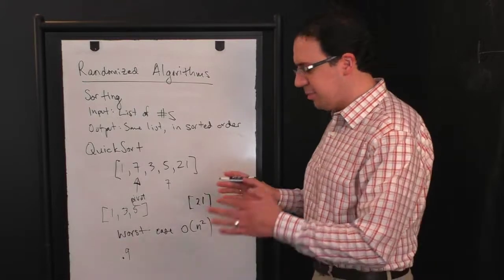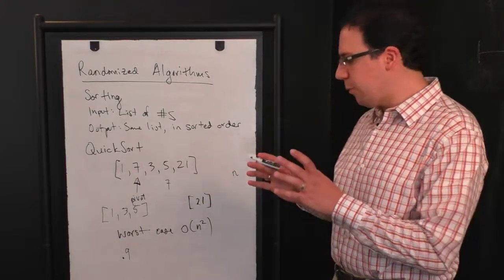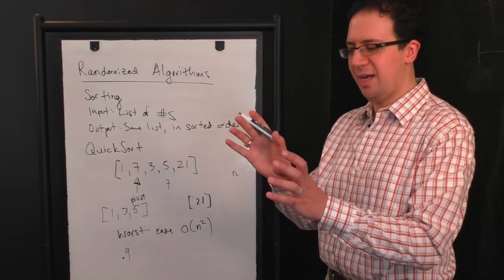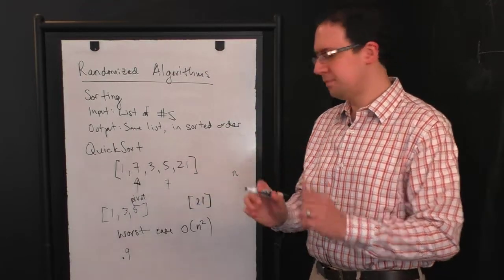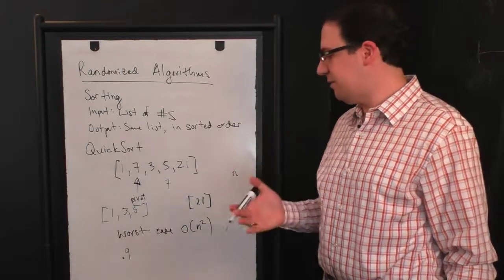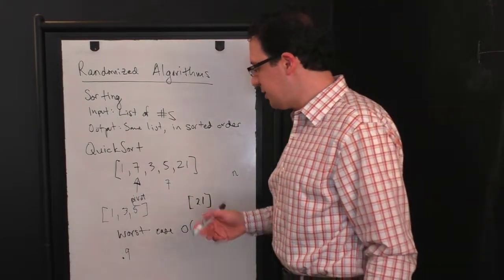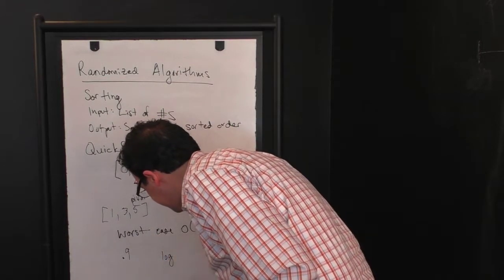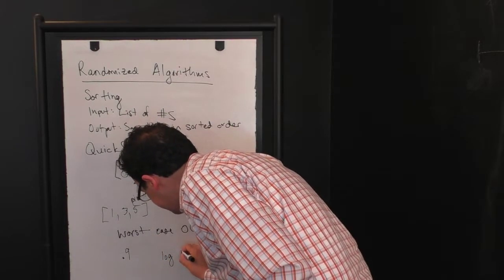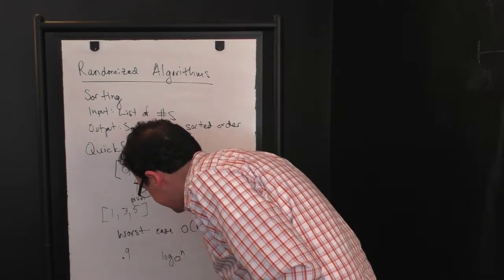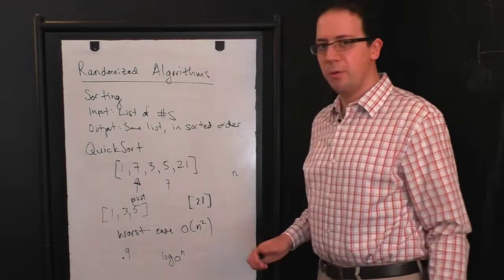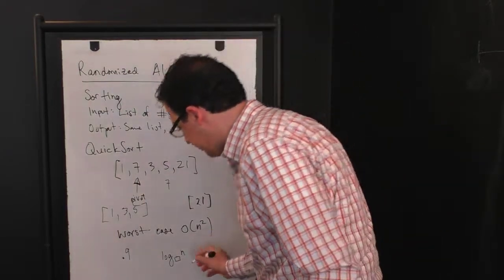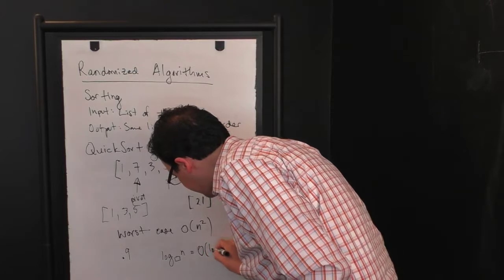And if it's in the middle 90%, then in the worst case, you're splitting your list into 5% of the list and 95% of the list. But the point is 95% is still a constant fraction of the list. So the number of times you have to do the pivot is log of N where the base here is no longer two, but is one over 95%. But in terms of order of growth, this is still the same as order log N.